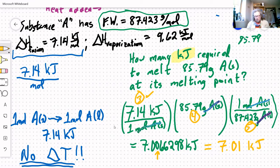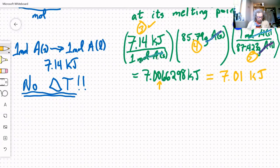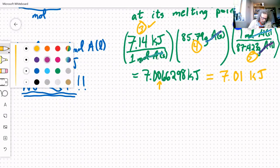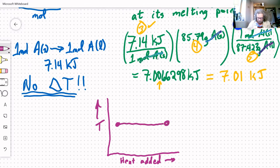Now, looking at that graphically, what does that look like? Well, that one's a pretty boring graph, to be perfectly honest. So if I've got heat added and temperature, well, the temperature doesn't change. So all I did was add 7.01 kilojoules of heat to get to where I'm going.